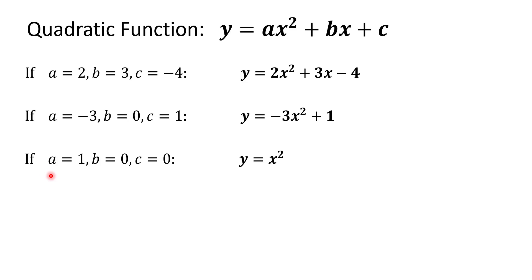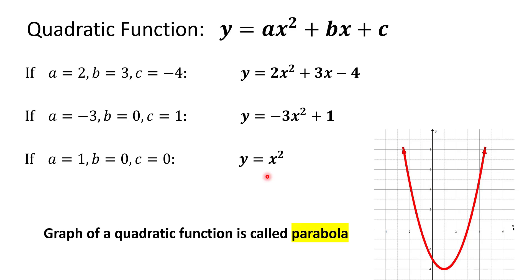And finally, if we let a equal 1, but both b and c are zeros, then we're going to end up with the basic quadratic function y equals x squared. And for all those functions, no matter what values we use for a, b, and c, their graphs will be parabolas.